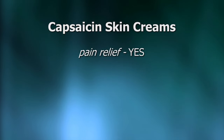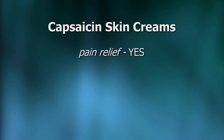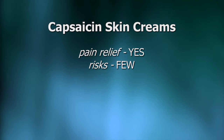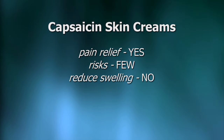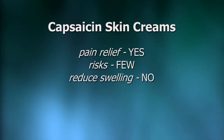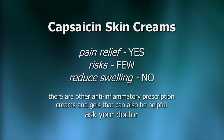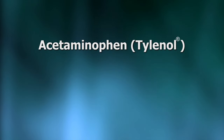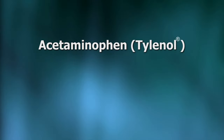Many people get pain relief from capsaicin skin cream, like Zostrix or Theragran, with few or no side effects or risks. Capsaicin creams don't reduce inflammation or swelling, but can give some pain relief. If you need more relief than what a skin cream provides, one of the most commonly recommended medicines you can buy over the counter and take orally is acetaminophen, which you may know by its brand name Tylenol.